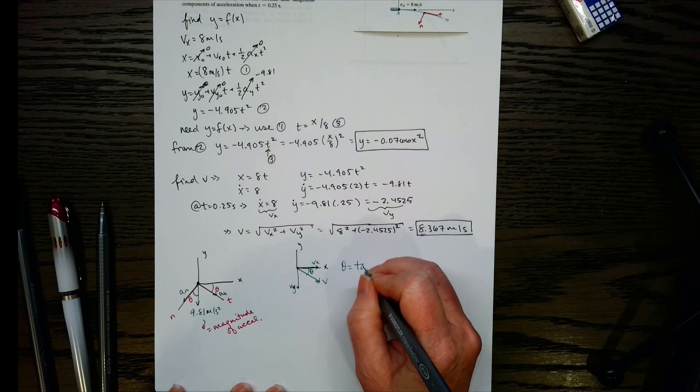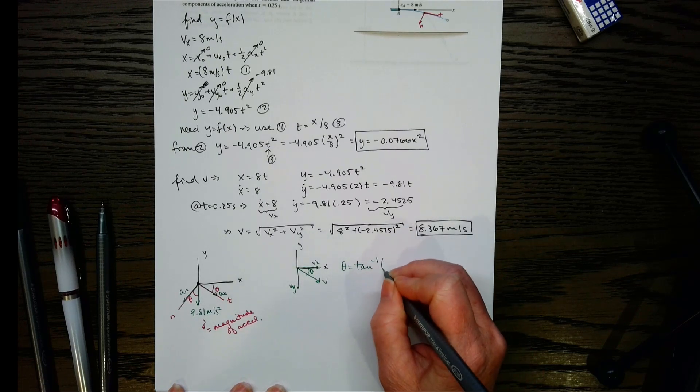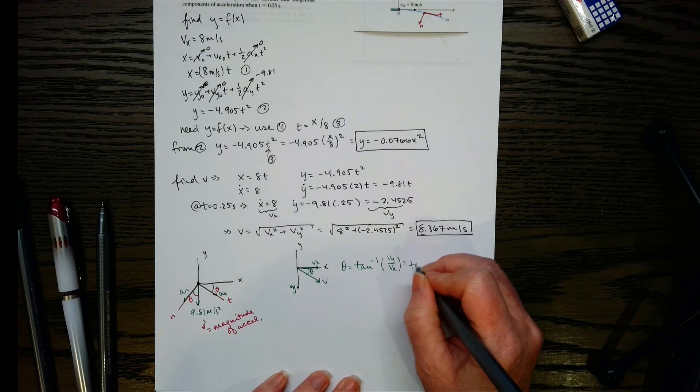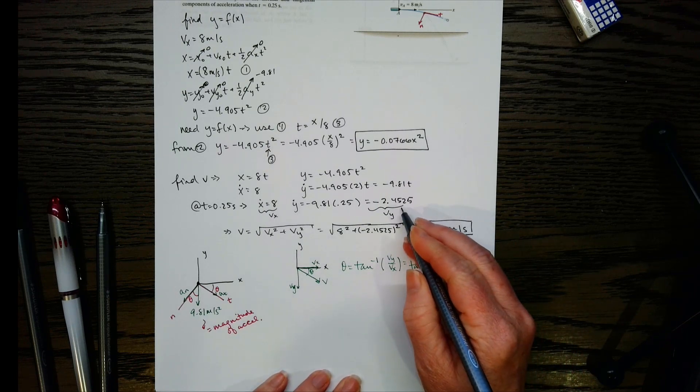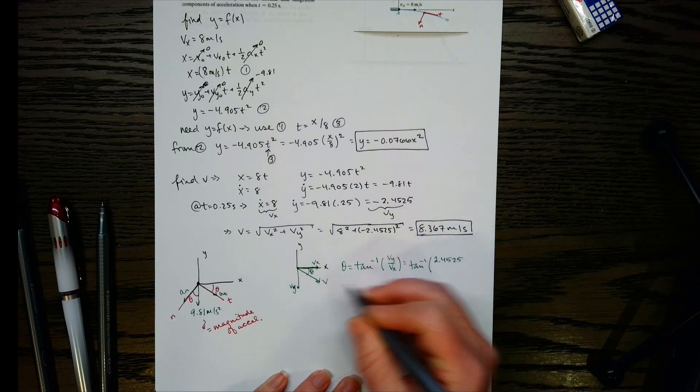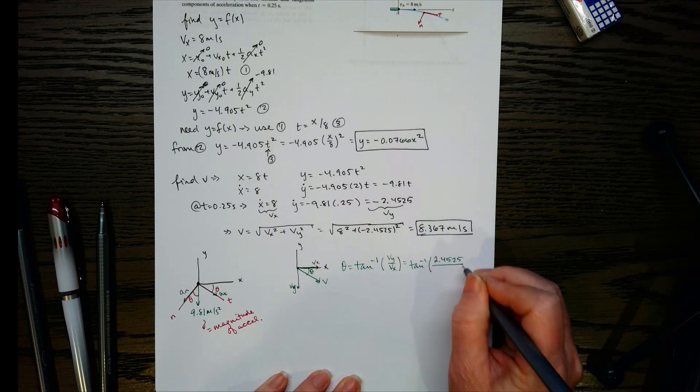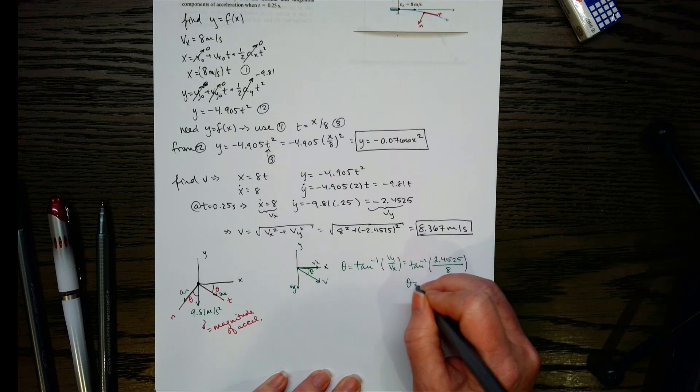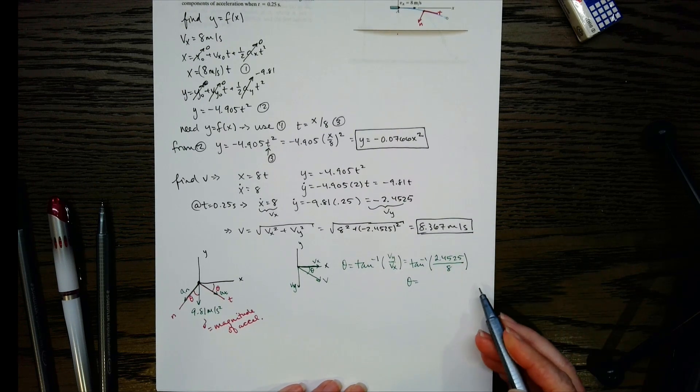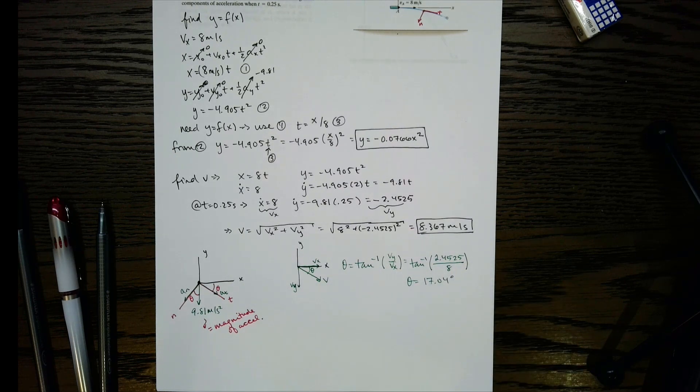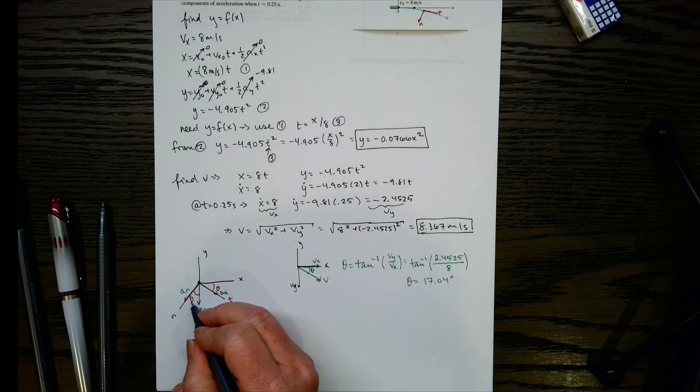So theta then is going to be the arc tangent of VY over VX. Because remember, tangent's opposite over adjacent. So we will have arc tangent of VY, 2.4525. I left the negative off here because I already drew it in this direction. So I already knew what quadrant we were in. And then VX is going to be 8. So put that in your calculator. It needs to be in degree mode. And you get 17.04 degrees. So that's what we'll use for this theta here.